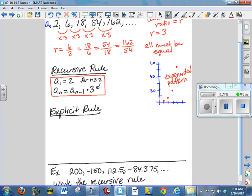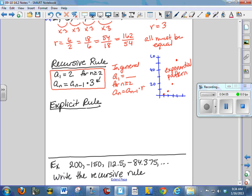So in general, we would say a sub 1 equals whatever blank, and then for n greater than or equal to 2, a sub n equals a sub n minus 1 times r, or we could say r times a sub n minus 1, either way. So that's our recursive rule. We could use that to continue to generate terms by multiplying the previous term by 3.